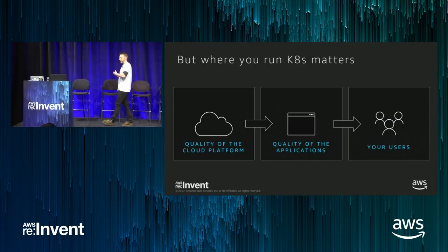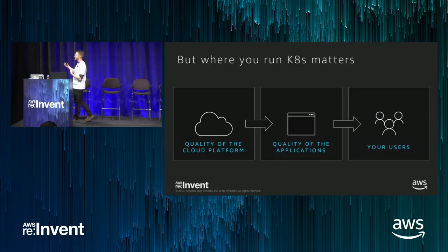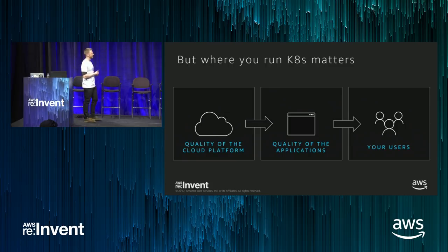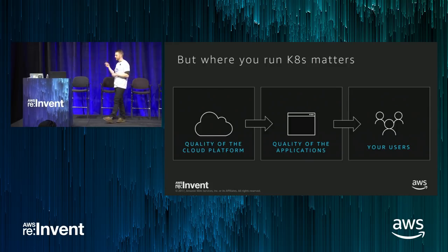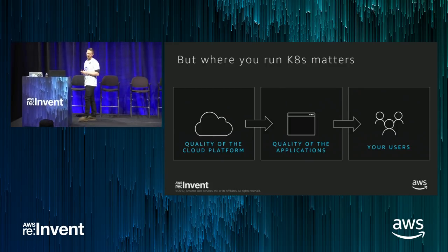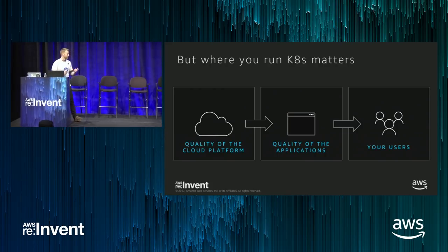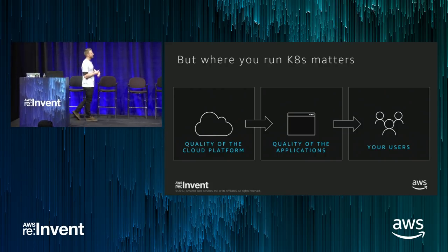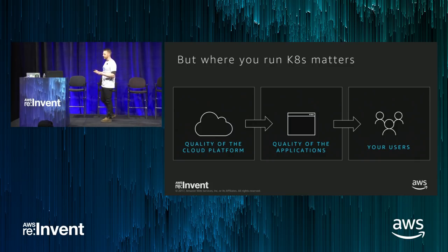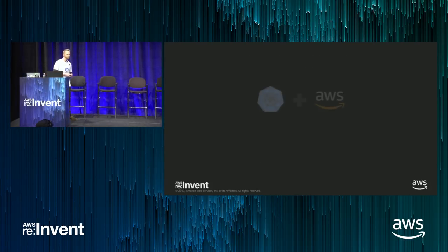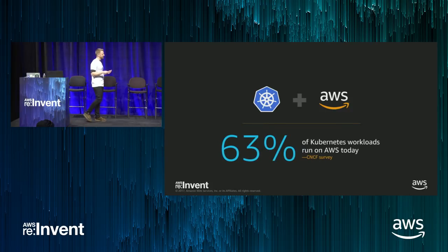If there's something off the shelf with AWS that you want to use, you can do that in Kubernetes — you don't have to implement your own load balancer every time. The end result impacts your users: they notice things like application performance, whether they receive updates and security patches quickly, and whether your application is down occasionally. So you really want to run Kubernetes in a place that can support your workload and support your users.